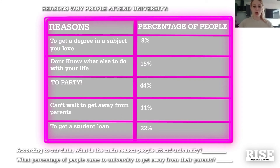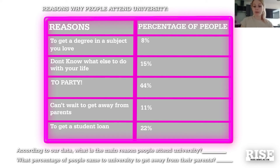The first question asks: according to the data, what is the main reason people attend university? We can't visually look at a chart now, so we just look at the numbers. Looking at the right-hand side, 44 is the biggest percentage, so the main reason people attended university is to party.